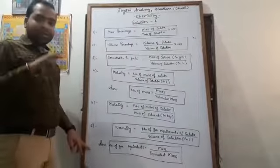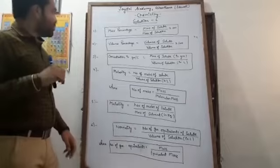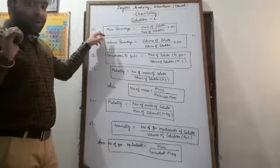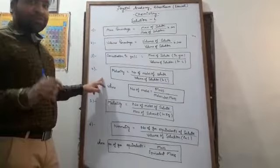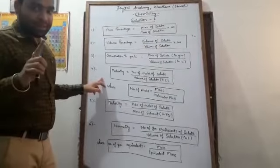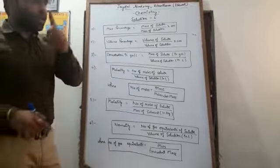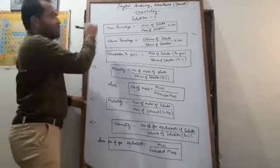Here I have written the 6 units that are most commonly used. The first one is mass percentage. There is one point to remember that all of these units we have already studied in class 11th, but still I am going to teach it to you so that you can revise the same quickly. First one is mass percentage.